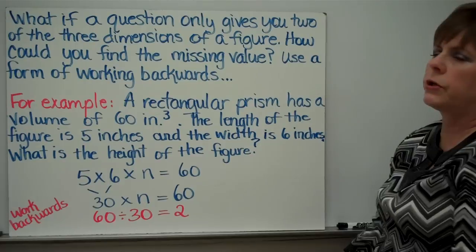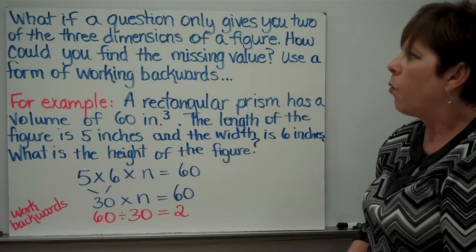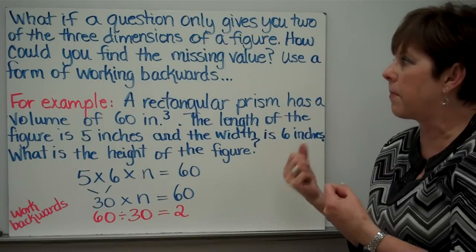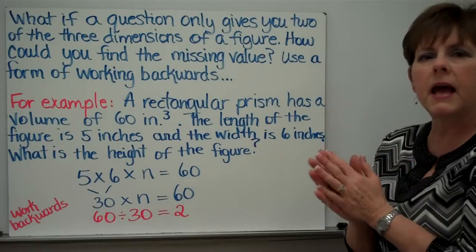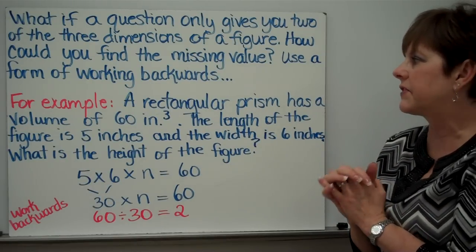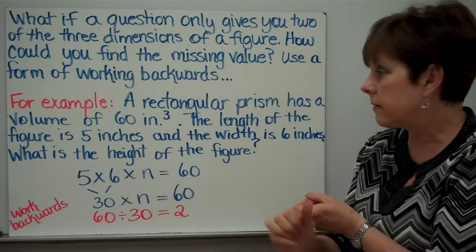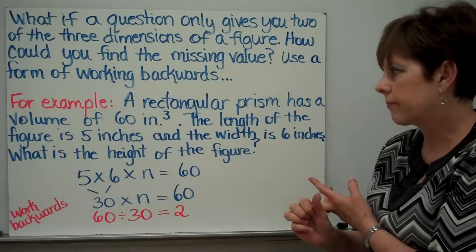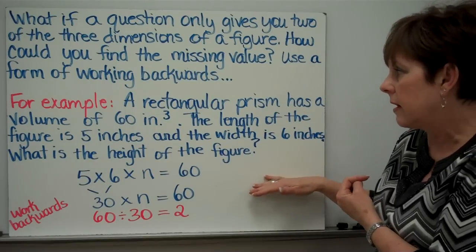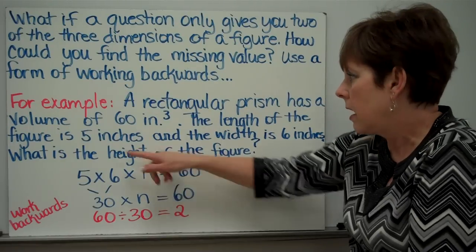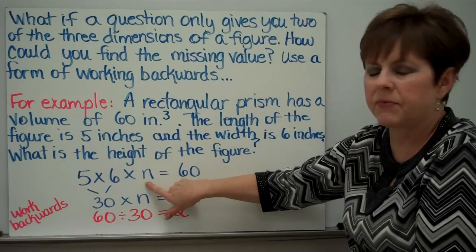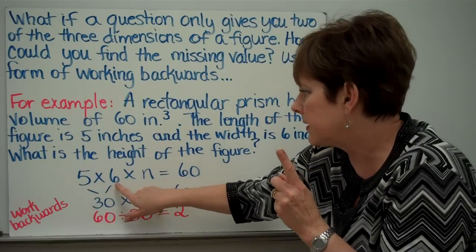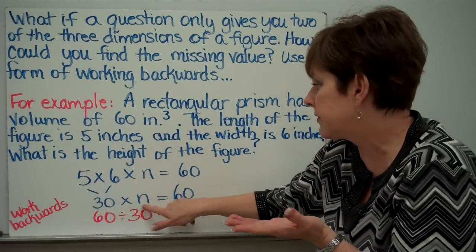What if a question only gives you two of the three dimensions of a figure? How could you find the missing value? The way that you would do this is to do a kind of form of working backwards. Let's say, for example, a rectangular prism has a volume of sixty cubic inches. We know what the total is. The length is five inches and the width is six inches. What is the height of the figure? We know what the length is, we know what the width is, but what's the height? How tall is it? I've said that sixty is our total amount. Five times six times something. This is my unknown. I don't know what it is yet. Five times six times something is sixty. Multiply these first two. Five times six is thirty. Thirty times something equals sixty.